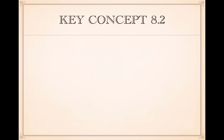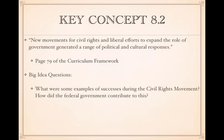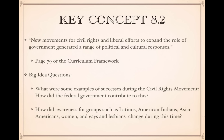Key Concept 8.2 states: new movements for civil rights and liberal efforts to expand the role of government generated a range of political and cultural responses. Big idea questions you should be able to answer: What were some examples of successes during the civil rights movement and how did the federal government contribute? How did awareness for groups such as Latinos, American Indians, Asian Americans, women, and gays and lesbians change during this time? And why were some people on both the left and the right assailing liberalism?